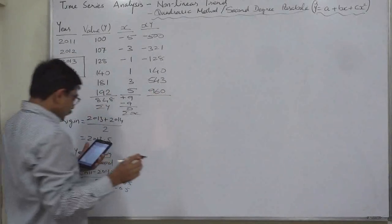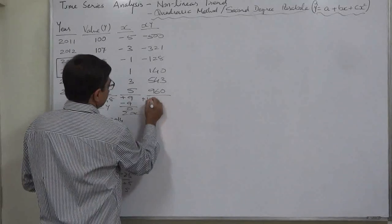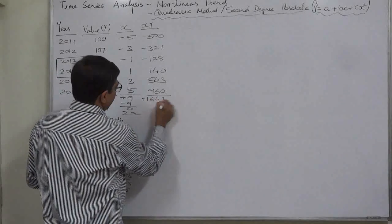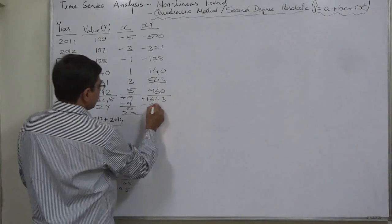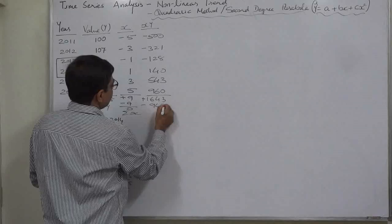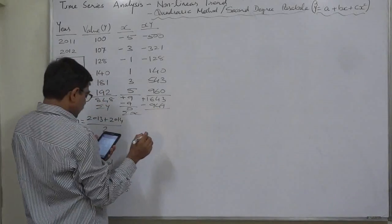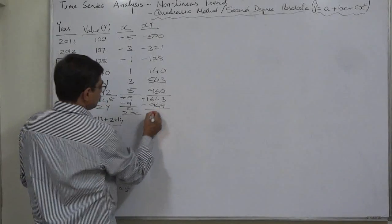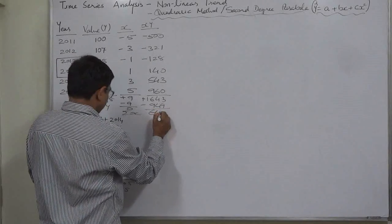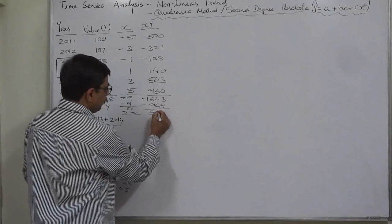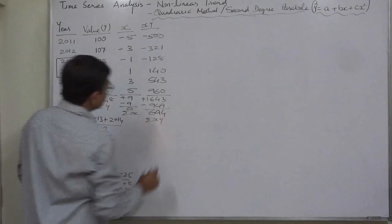The positive total of XY comes to 1643 and the negative total comes to 949, so the net summation ΣXY equals positive 694.